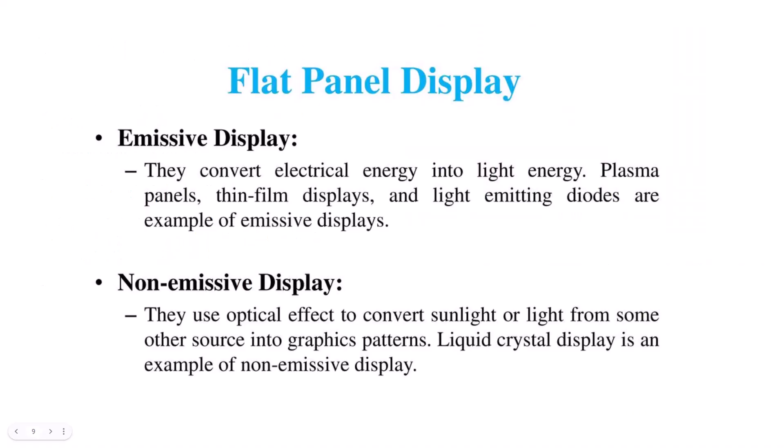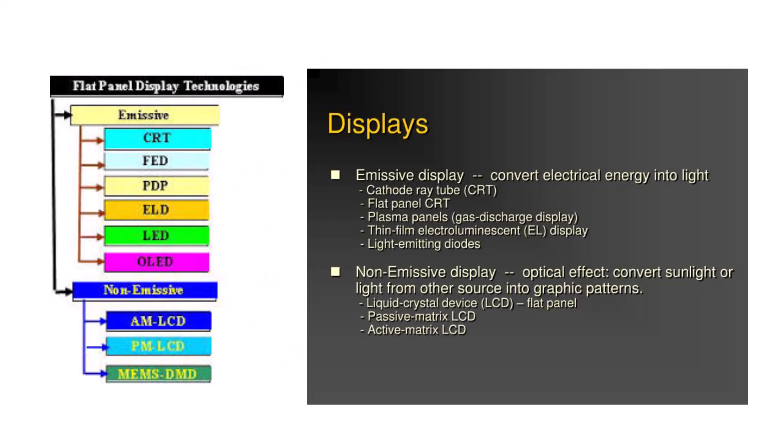In a flat panel display system, the lighting displayed is either emissive or non-emissive. An LCD screen is considered a non-emissive display because you need sunlight or light from another source to convert it into graphic patterns. An emissive display, such as plasma screens, converts electrical energy into light. LCD is a non-emissive display, while plasma screens, LED (light emitting diodes), and old CRT screens are all emissive displays.